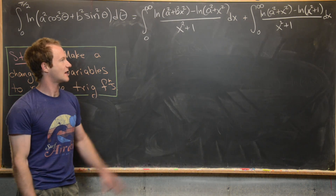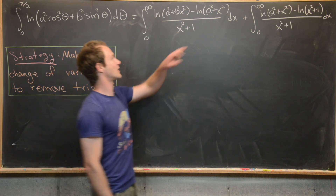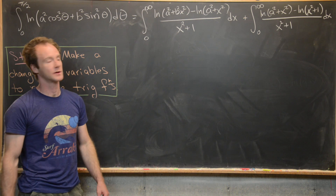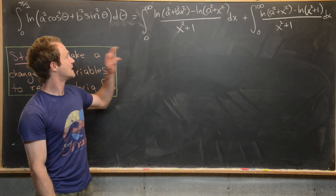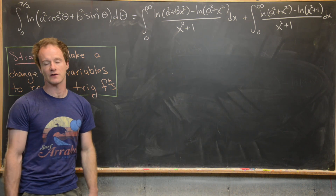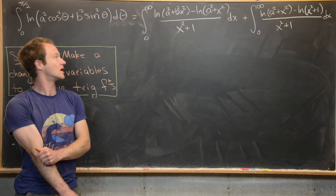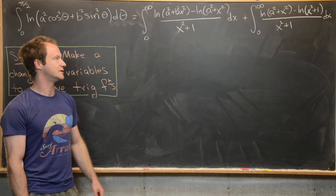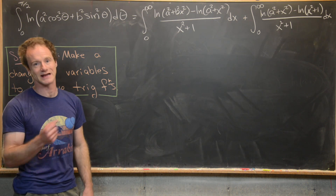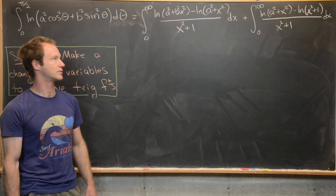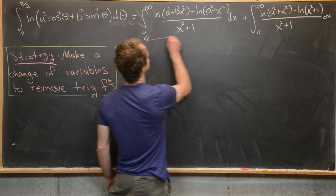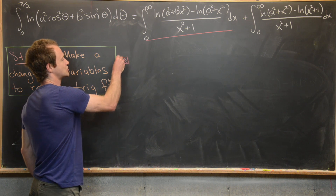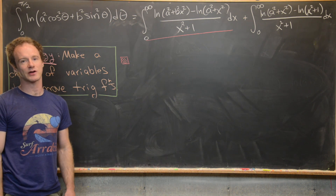On the last board we arrived at the following integral. After adding and subtracting the natural log of a squared plus x squared, we split it into two parts. The first integral is from zero to infinity of natural log of a squared plus b squared x squared minus natural log of a squared plus x squared, all over x squared plus one. The second is from zero to infinity of natural log of a squared plus x squared minus natural log of x squared plus one, all over x squared plus one. I'm going to calculate these one at a time, starting with the first integral, which I'll mark in red.